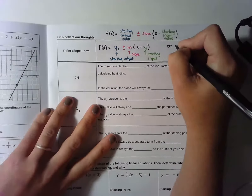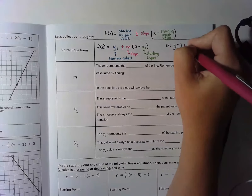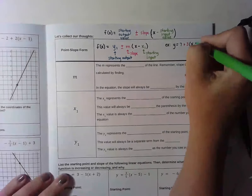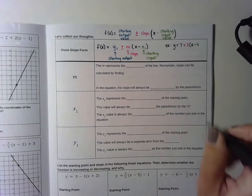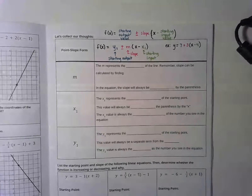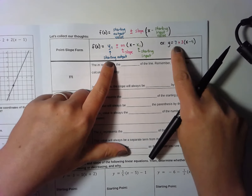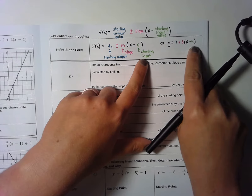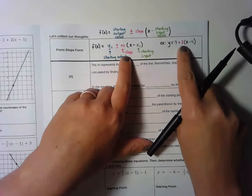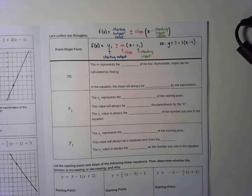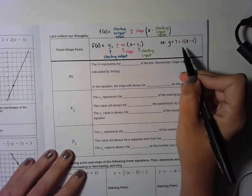An example of how this equation might look would be: y equals 7 plus 3 times parentheses x minus 4. In this equation, I would be able to tell that the starting point had a y value of 7, an x value of 4, and the slope was positive 3. I can just look at the numbers and figure out the information without really doing any work.